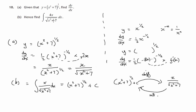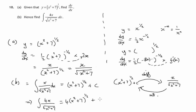Now, if we look at what we're trying to integrate, the only difference between this and this is we're multiplying by 4. So let's multiply both sides by 4. The 4 will appear on the top and we get 4 times this plus a constant. We don't need to write 4 times a constant because 4 times any number is still just any constant. So if we integrate 4x over the square root of x squared plus 7, that's the resulting expression.